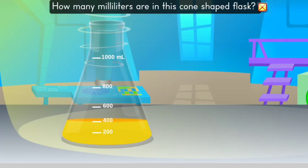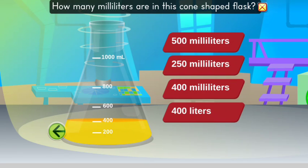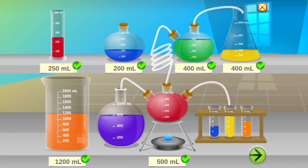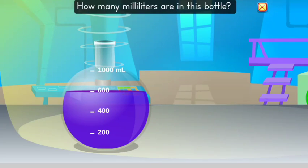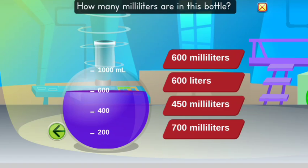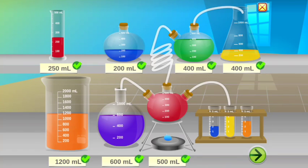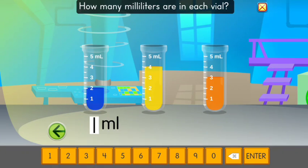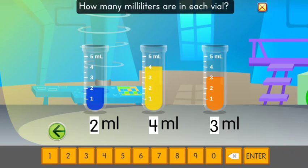How many milliliters are in this cone-shaped flask? Four hundred milliliters. Great job estimating! How many milliliters are in this bottle? Six hundred milliliters. How many milliliters are in this bottle? Four hundred milliliters.